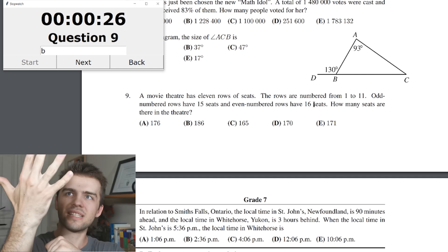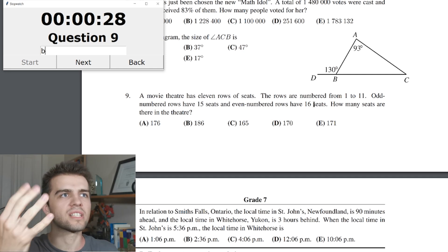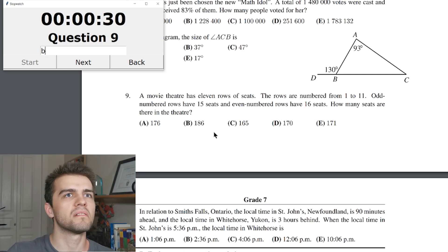And even numbered rows have 16 seats. 2, 4, 6, 8, 10. 160, 90 plus 160. Am I doing something wrong here? 5 times 16 is 50, 30, 80. So, it should be 170. The answer is D, and I'm getting through this no problem, except for that one question, which was just a minor glitch.